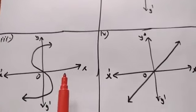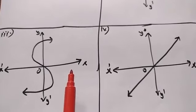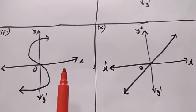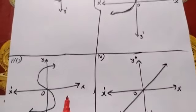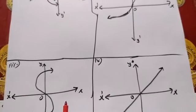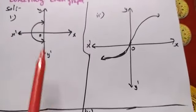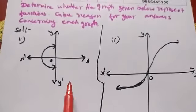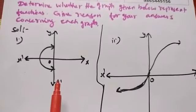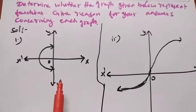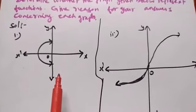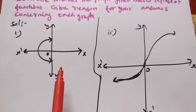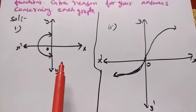We use the vertical line test to determine the graph function. So, we have a review. We use the vertical line test along the x-axis to check the graph function. On the vertical line, if the graph function has 1 point, it is a function. If the graph has more than one point, it is not a function.